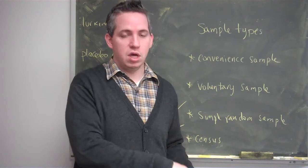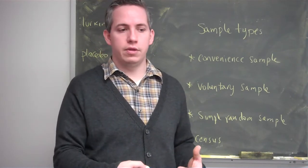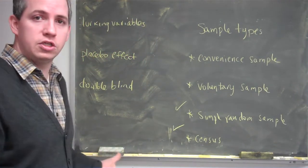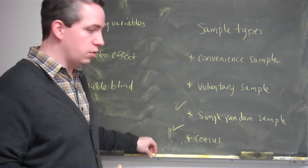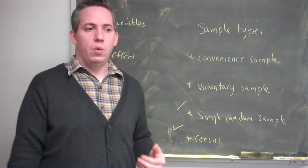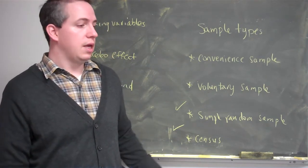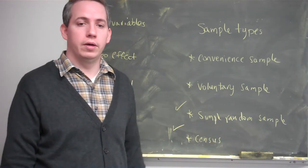There are all sorts of things that can go wrong in an experiment. And knowing that makes it easier when we're looking at articles on Facebook or in the newspaper. We can identify, good God, they used something really biased and their results are tainted because of it. And that's what we want to try to figure out.